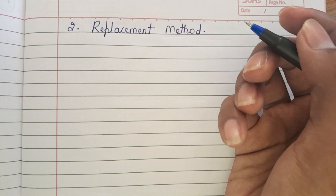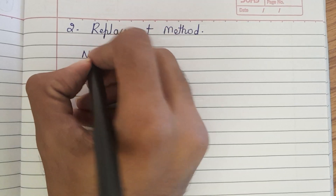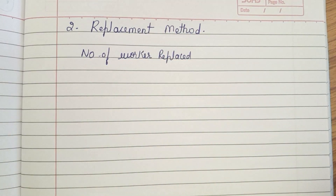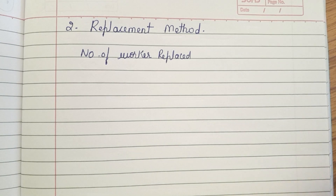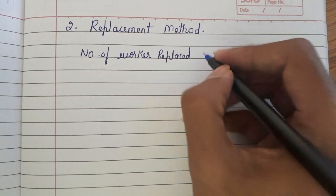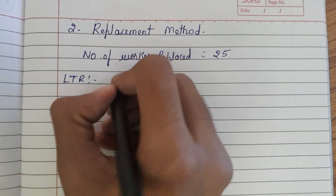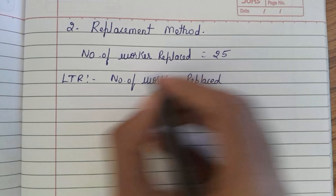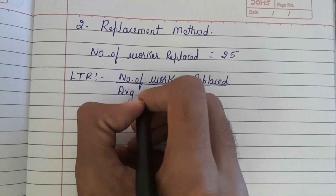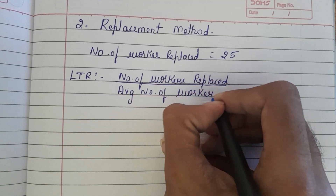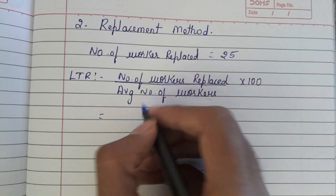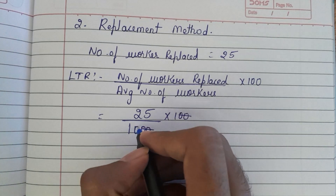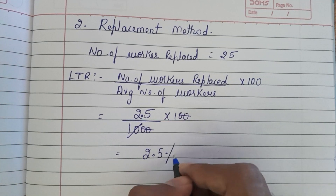Under replacement method, we consider only the number of workers replaced. From the question, 25 workers are recruited in the vacancies of those who left, so number of workers replaced = 25. Labor turnover rate = 25 / 1,000 × 100 = 2.5%.